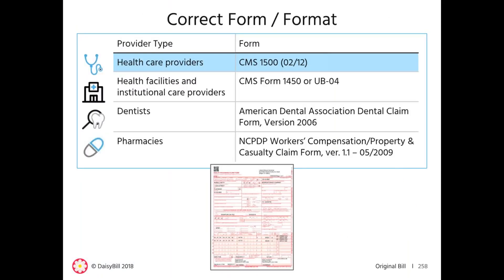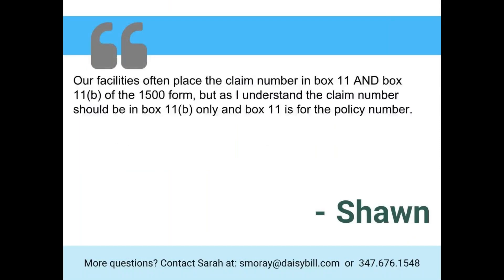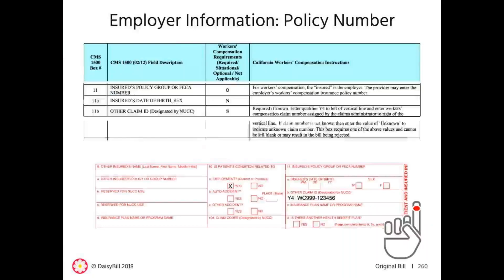Next question from Nick: are there times when I do not need to use a CMS 1500 form and can use my own billing form? No — you cannot use your own bill form. The DWC guide lists the required billing forms, and healthcare providers must use the CMS 1500 for paper billing. Regarding another question: box 11 is for the employer's insurance policy number, not the claim number — that goes in box 11B only. Box 11 is not a required field.